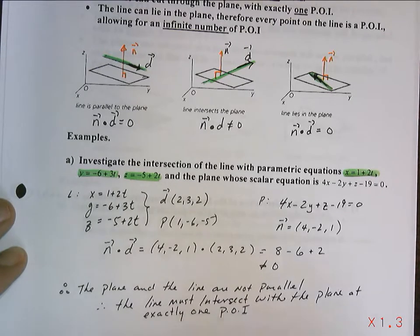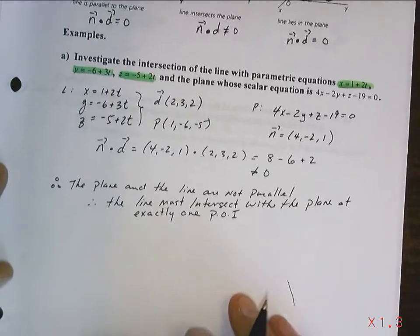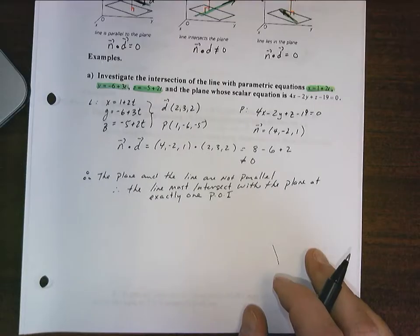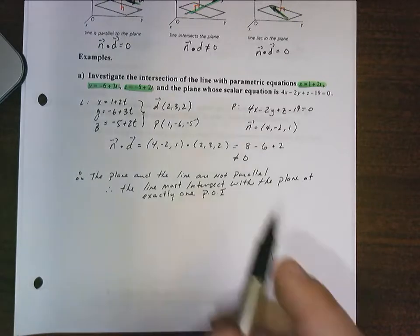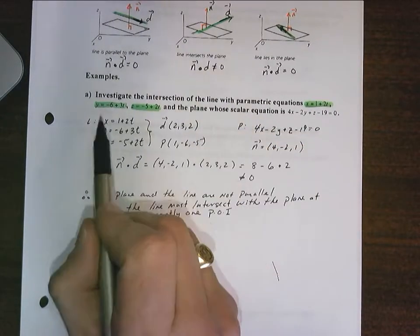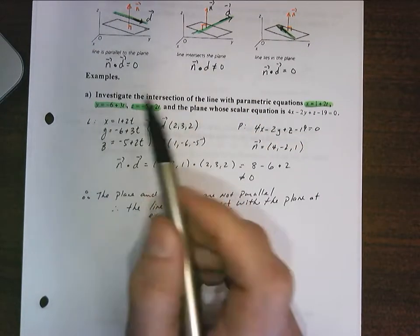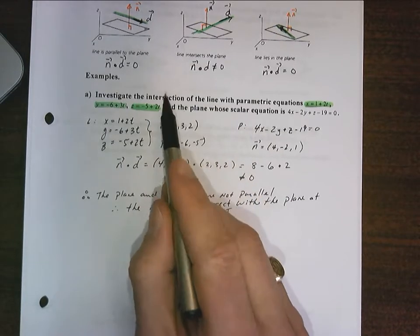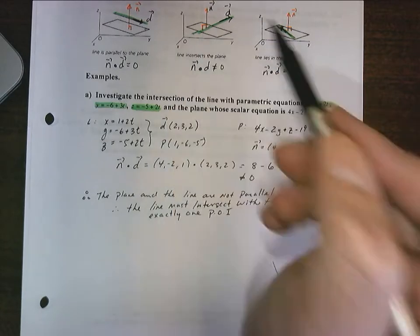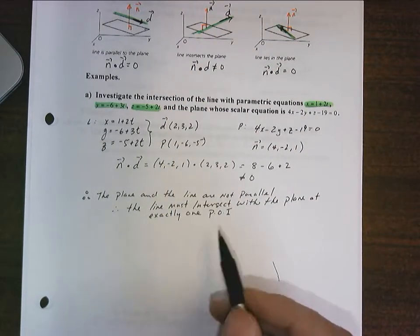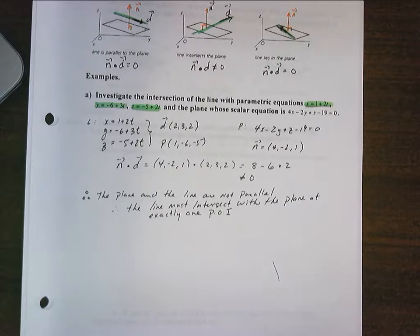And we'll call that the point of intersection. Good, so we know that this is the case. Now, it says investigate the intersection. And when it says that, it also wants you to find the intersection if one exists. And in this case, it's asking for the point of intersection. So we know that a point of intersection exists. They're asking us now to find it.